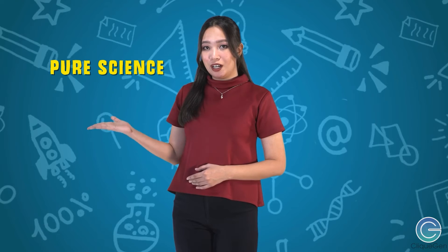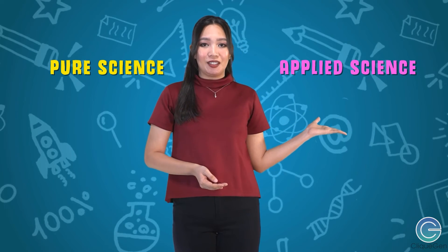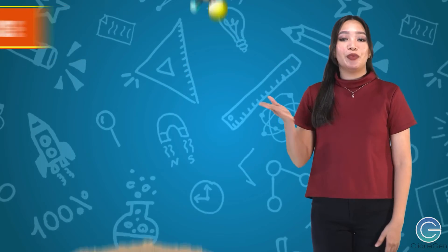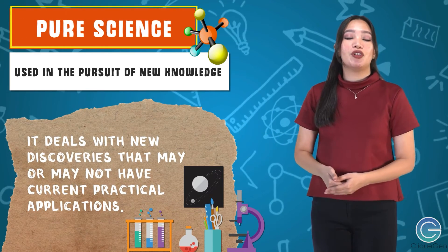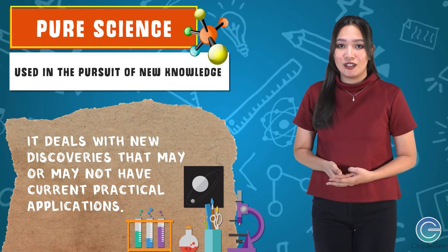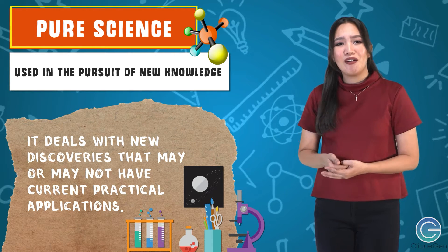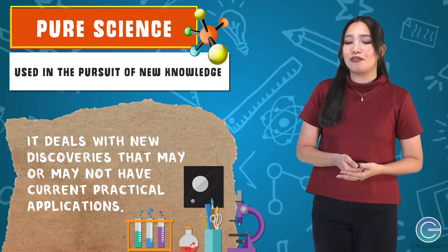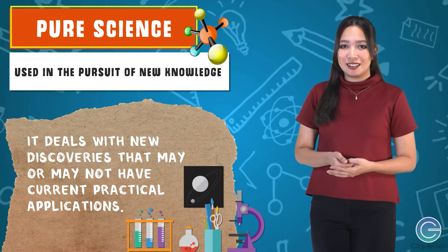Natural science can be further subdivided into pure or applied science. Pure science is used in the pursuit of new knowledge — it deals with new discoveries that may or may not have current practical applications.